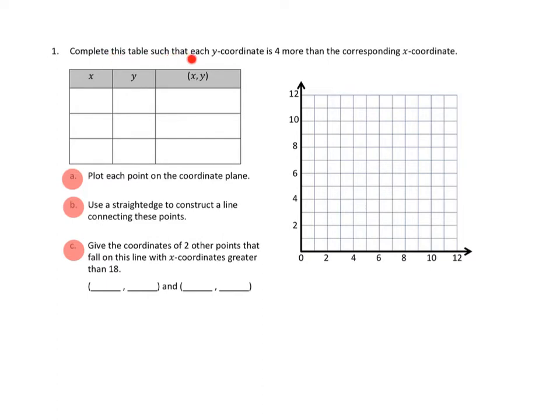Let's take a look at problem number 1. Complete this table such that each y coordinate is 4 more than the corresponding x coordinate. And then I see here we've got our coordinate plane. Each y coordinate is 4 more than the corresponding x coordinate. So let me just start with the easiest one. If we said that x was 0, what would y be? Each y coordinate is 4 more than the x coordinate, so y would have to be 4, right? Would that fit that rule? Yep, perfect.